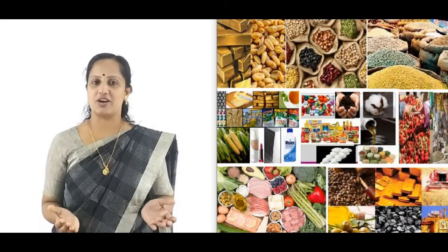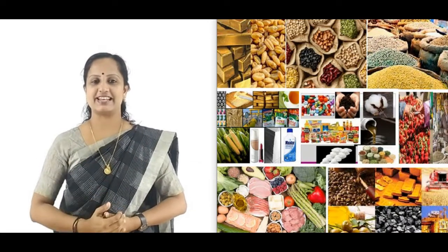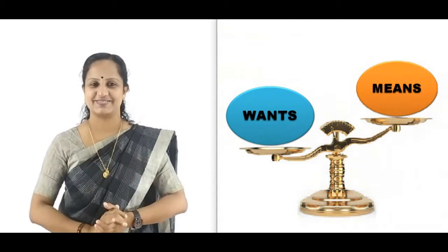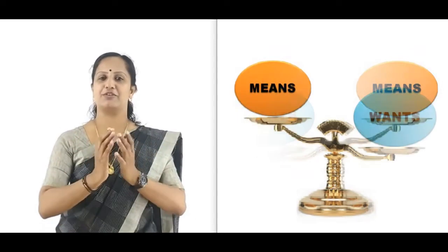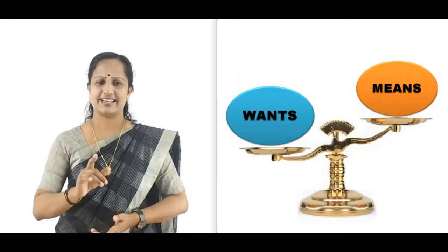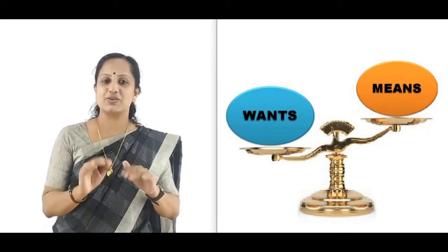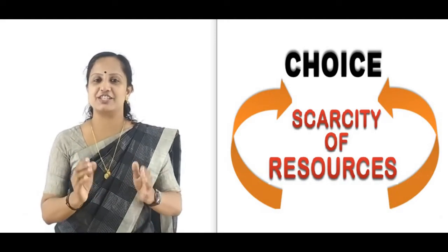People want a variety of goods and services to satisfy their wants, which implies that human wants are unlimited. But the means or resources to fulfill them are limited. Because of resource scarcity, the economy can produce only a limited amount of goods and services at a particular time. As the resources of every society are limited, the ability of the society to produce goods and services is also limited, so a choice has to be made among various alternative uses of resources. Thus, the problem of choice is a result of the problem of scarcity of resources.